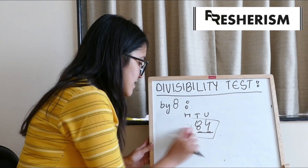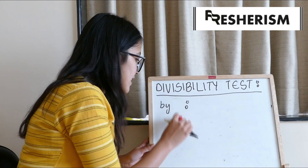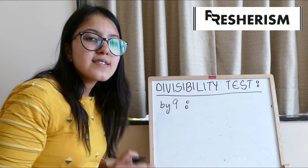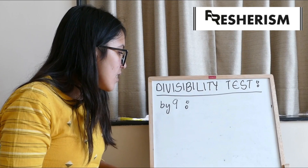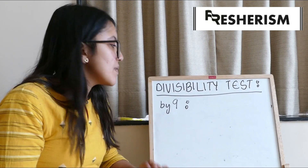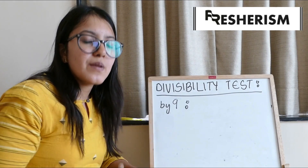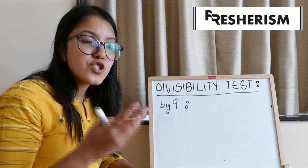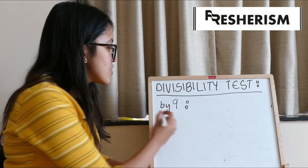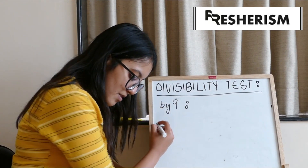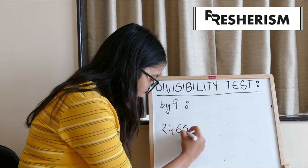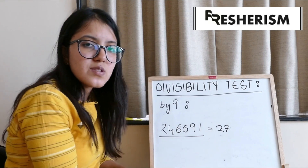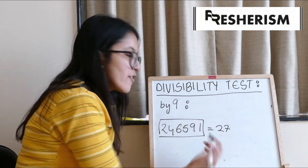Moving on to our next divisibility test, which is the test by 9. This one is very easy. The divisibility test of 9 is quite similar to that of 3. For a number to be divisible by 9, the sum of all the digits should be divisible by 9. For example: 246,591. All the digits sum up to be 27, which we know is divisible by 9. Hence, this whole number would be divisible by 9.